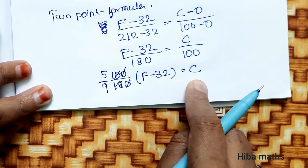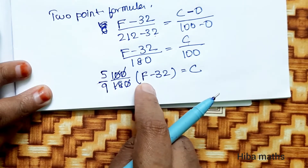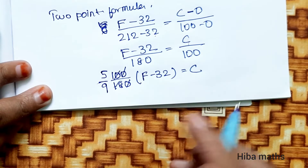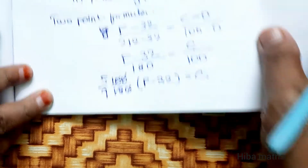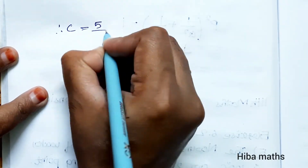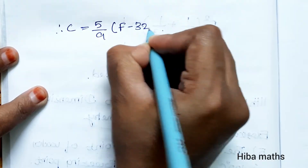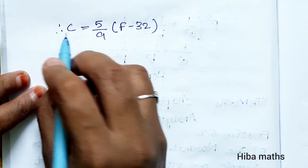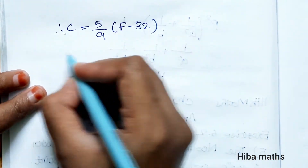So C is equal to 5 by 9 into (F minus 32). This is the linear relationship between C and F — this is our first equation.